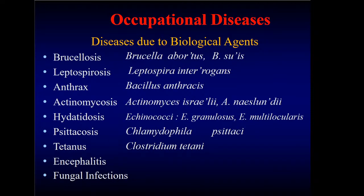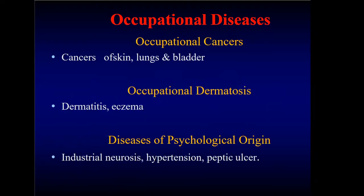Biological agents can cause problems like brucellosis, leptospirosis, anthrax, actinomycosis, hydatosis, psittacosis, tetanus, encephalitis, and fungal infections. Cancers include those of the skin and lungs. Occupational dermatitis includes eczema and chlorodermatitis. Psychological origins can lead to industrial neurosis and hypertension.